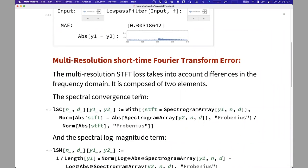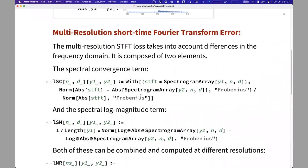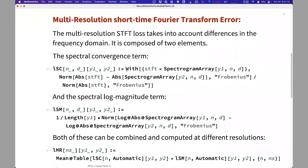So this is one part of the loss that is used. The other one is more perceptual. It is called multi-resolution short-time Fourier transform. And essentially, it consists of two elements, a spectral convergence